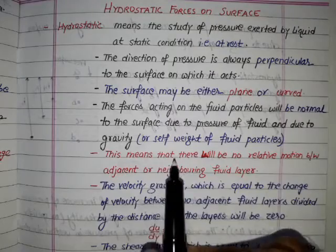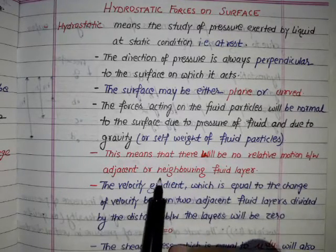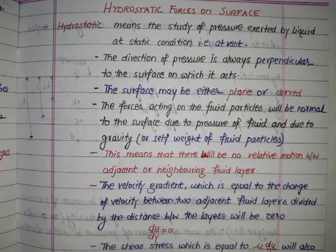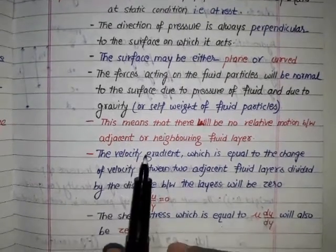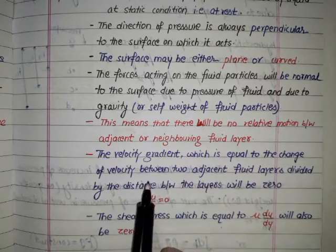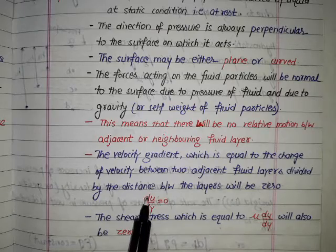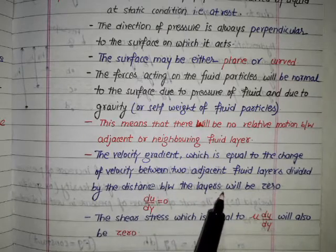This means that there will be no relative motion between adjacent or neighboring fluid layers. And the velocity gradient, which is equal to change of velocity between two adjacent fluid layers divided by the distance between the layers, will be zero.